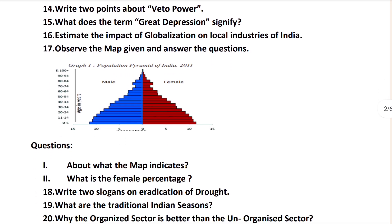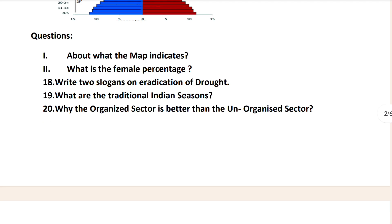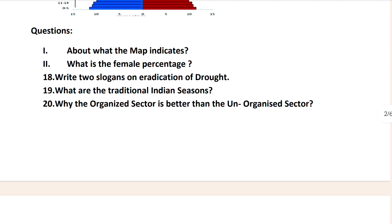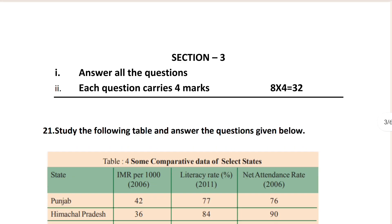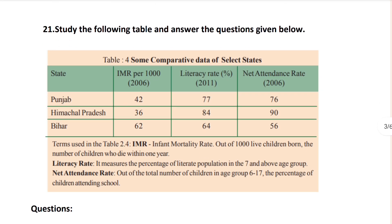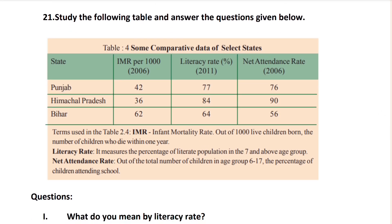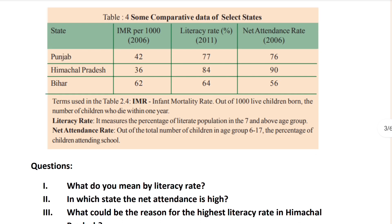Next, write two points about veto power — explain what veto power is. Then write two slogans on the strength of the protocol. Also, study the following table and answer the given questions: infant mortality rate, literacy rate, and net attendance rate.